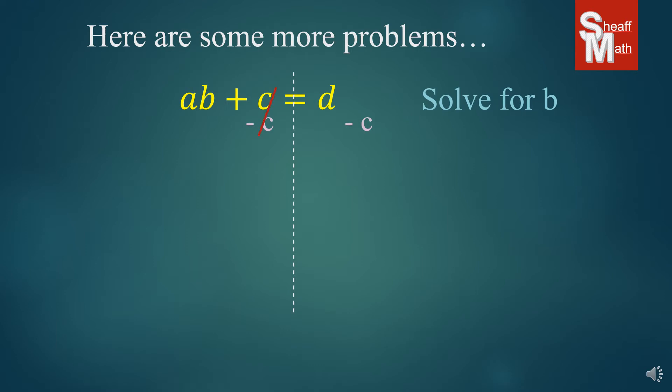And since D and C are not like terms we can't combine them together, and so we're just going to put D minus C on the right. We have AB on the left. So we want to get B by itself so we divide by A. Now you can divide A by the entire thing on the right or individually.